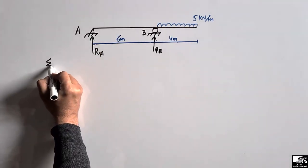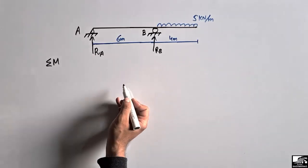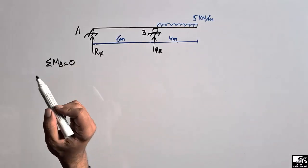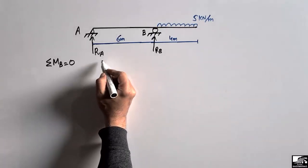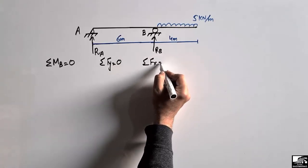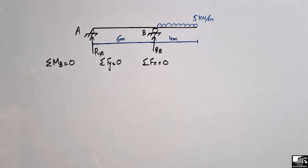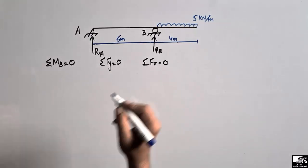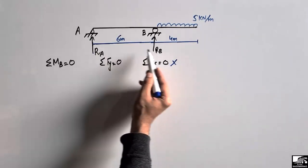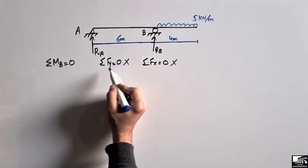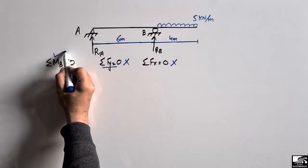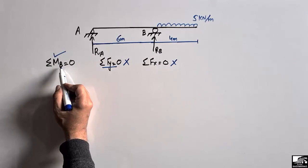We can find the support reactions in just two steps. The first step uses the summation of moments at a point equal to zero — let's take it at point B. We have three equilibrium equations available: summation of vertical forces equal to zero, summation of horizontal forces equal to zero, and summation of moments equal to zero. Since there is no horizontal load, we skip that equation. We have two unknowns, so we start with the moment equation.